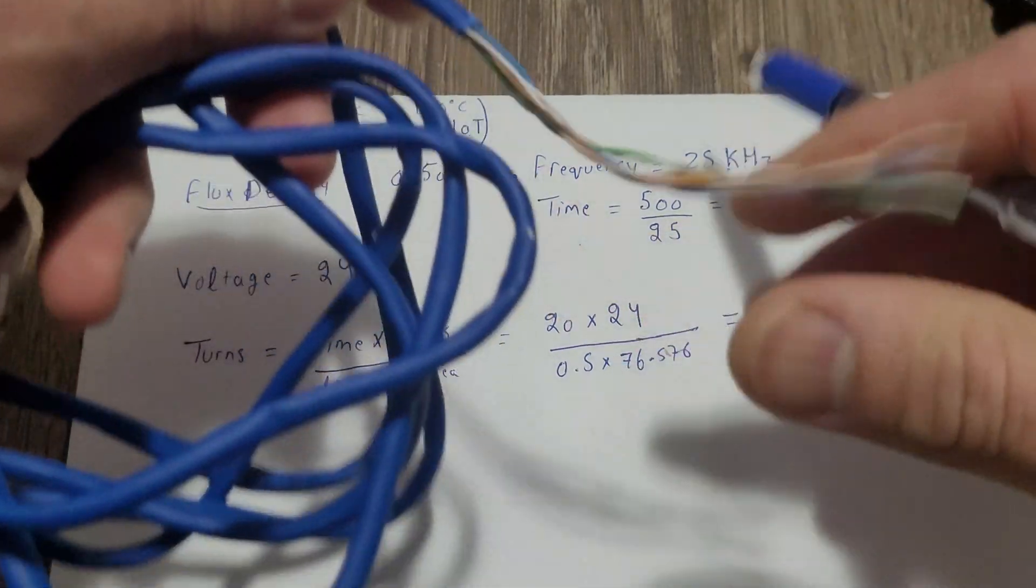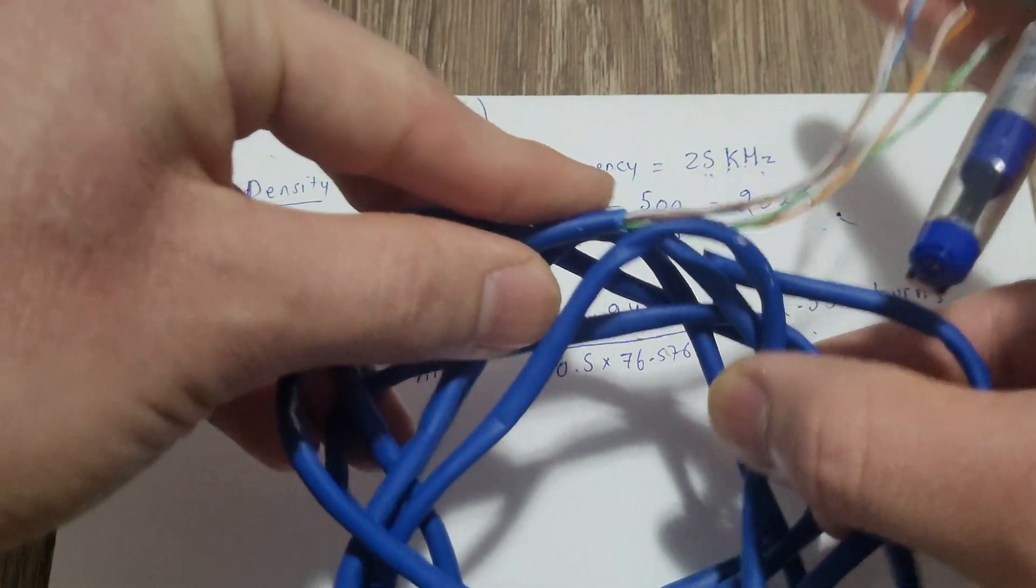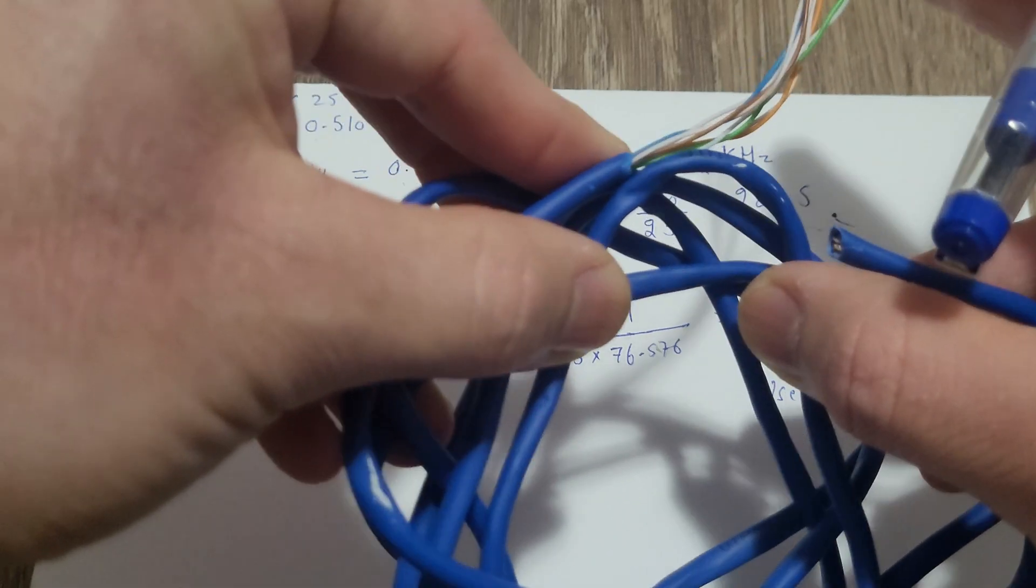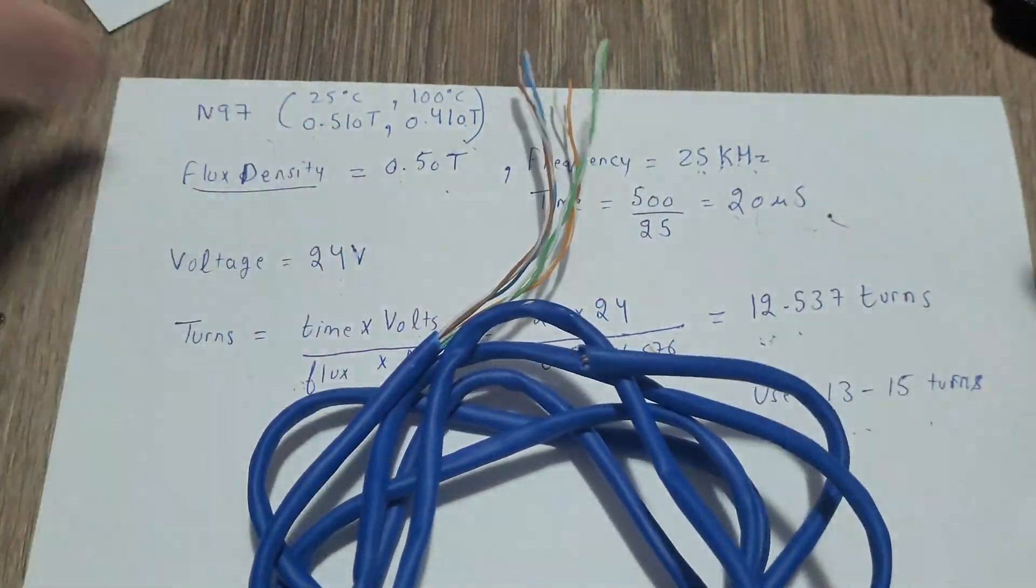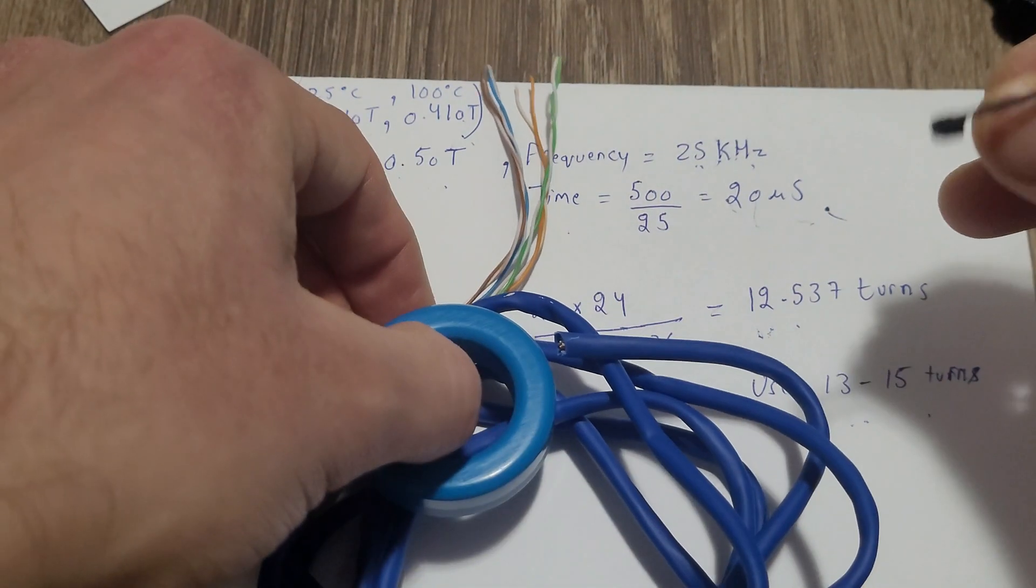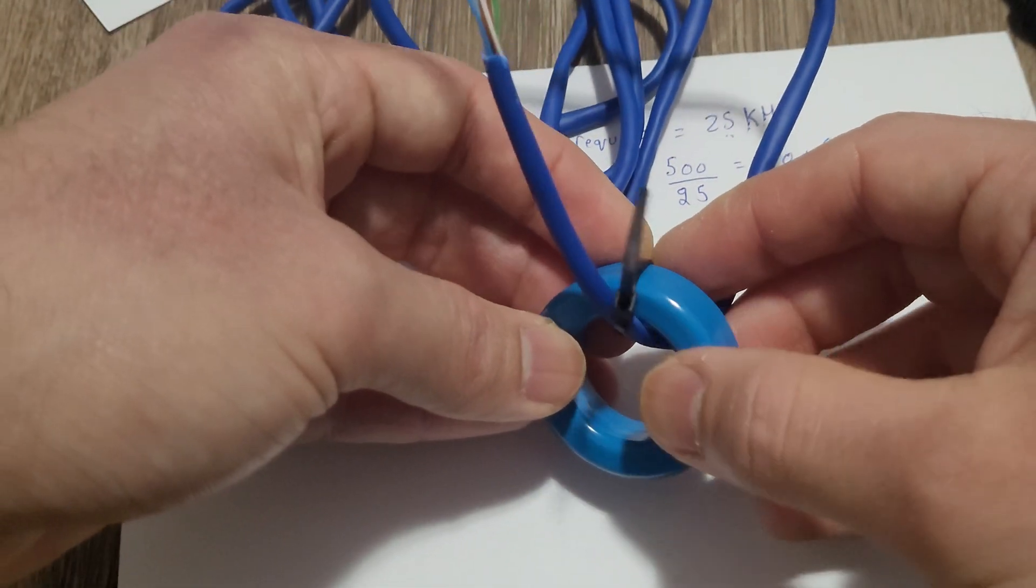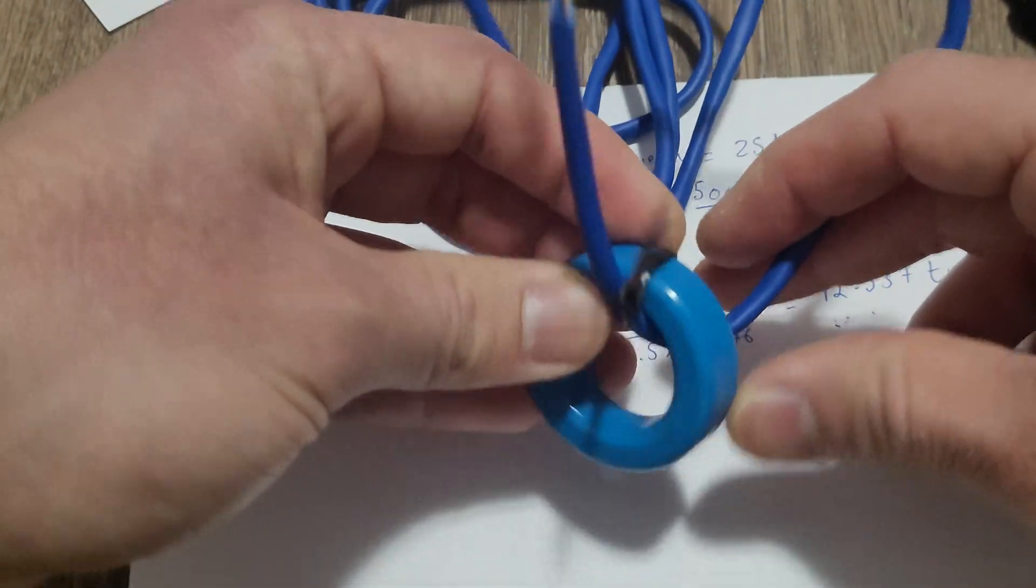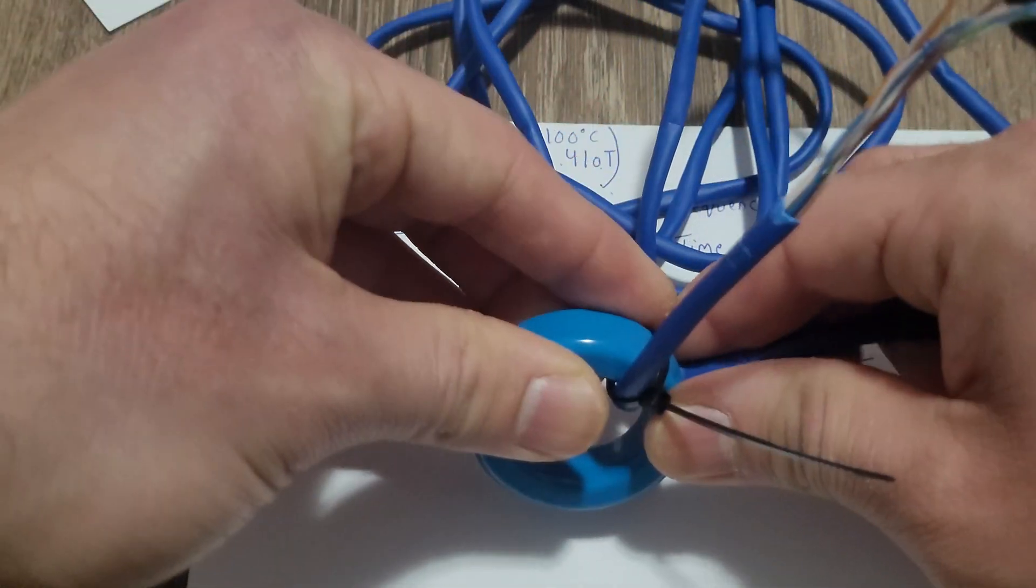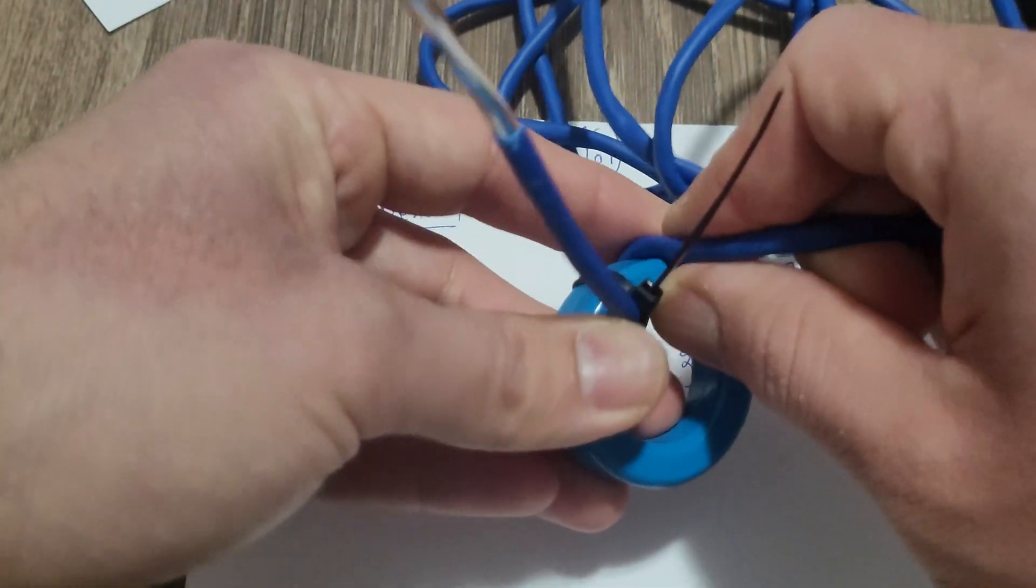So just grab a full length cable. I took this from a dollar tree, cost about one or two dollars or something like that, and your core. Grab a zip tie and tie the ethernet cable like this. This will hold the ethernet cable in place while you are making the turns.